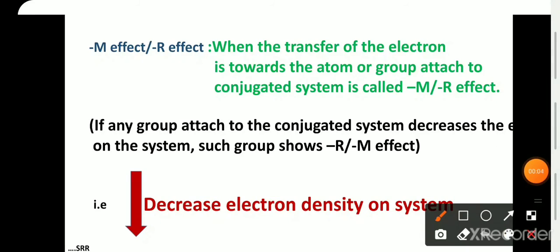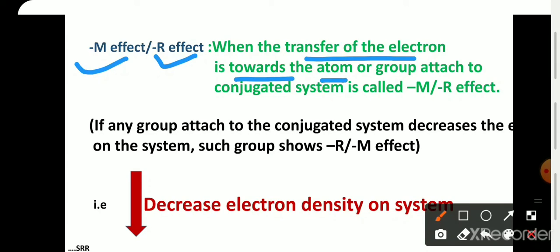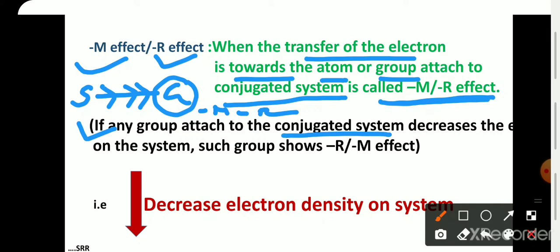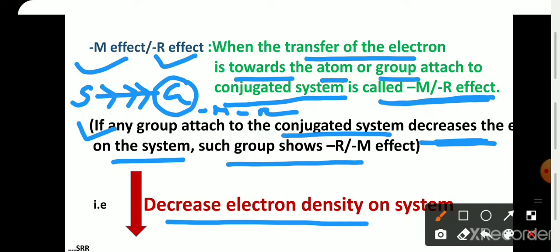The second type is minus M or minus R effect. When the transfer of electrons is towards the atom or group attached to the conjugated system, it is called minus M or minus R effect. If the electrons move towards the group, then that group shows minus M or minus R effect. In simpler words, if any group attached to the conjugated system decreases the electron density on the system, such a group shows minus R or minus M effect.